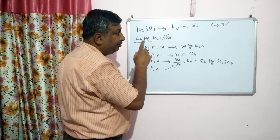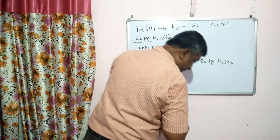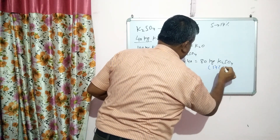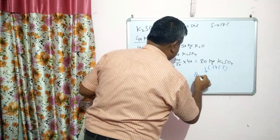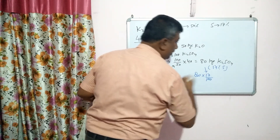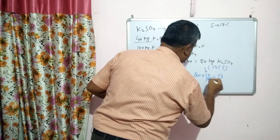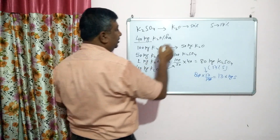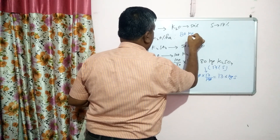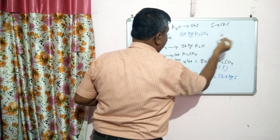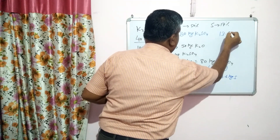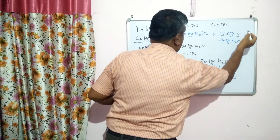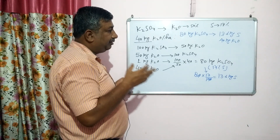The other essential macronutrient is sulphur, and potassium sulphate contains 17% sulphur. So the amount of sulphur obtained is: 80 × 17 / 100 = 13.6 kg sulphur per hectare. So applying 80 kg potassium sulphate provides 40 kg K2O and 13.6 kg sulphur — all on a per-hectare basis.